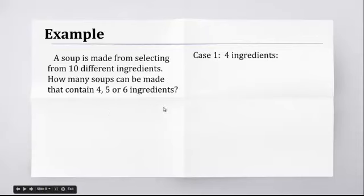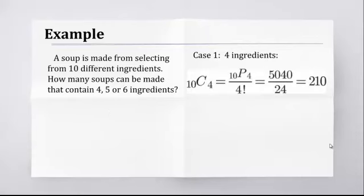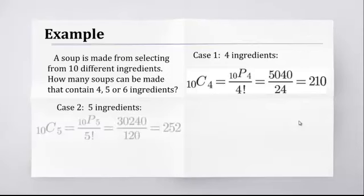So, the first one is 4 ingredients. 10 choose 4. That's all you have to do is, out of the 10 ingredients, you're choosing 4 of them. If you took 10P4, you get 5040. If you divide that by 4!, you get 210. If you have 5 ingredients, same thing. You get 10C5. If you have the permutation, you get 30,240. Divide it by 5!, you get 252. If you wanted 6 ingredients, you get 10 choose 6. It's not very challenging, right? You've just got 3 cases. Take the permutation, divide it by 6!, you get 210.